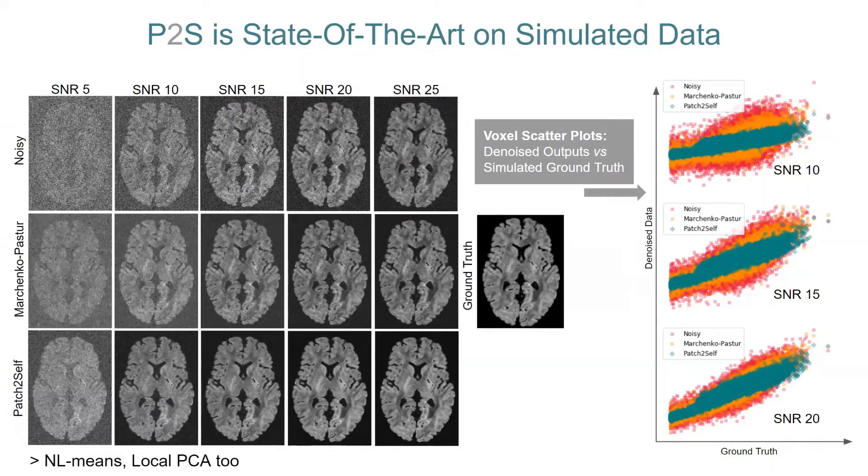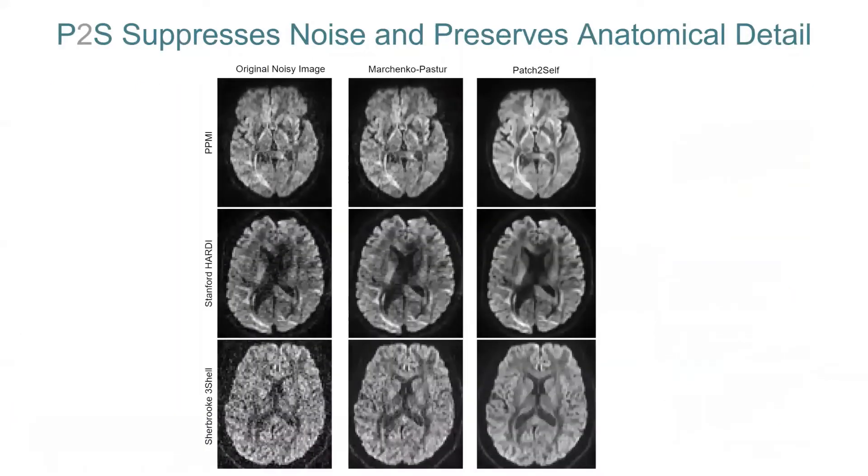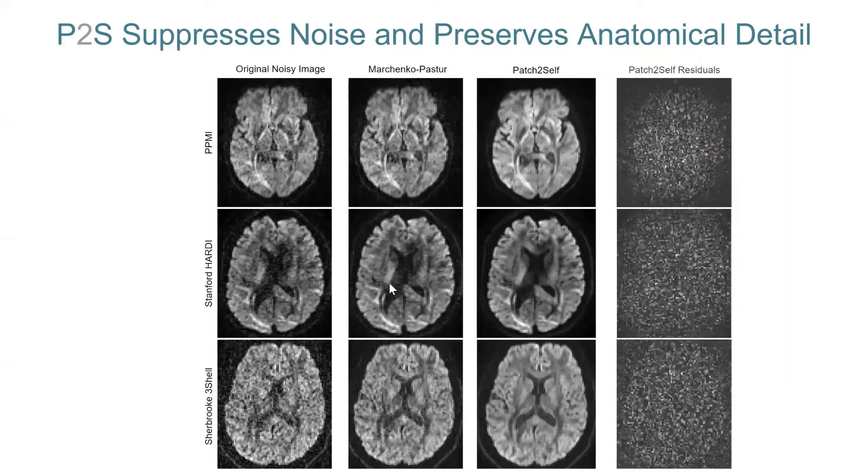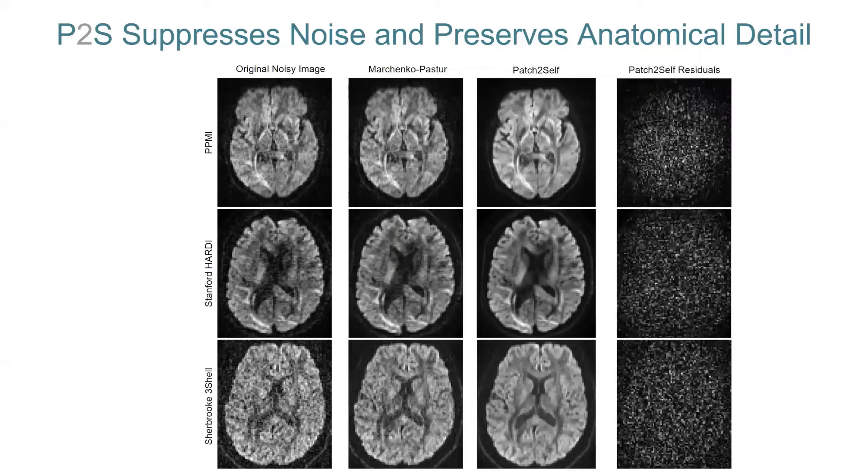Patch2Self does not suppress signal, and it more or less preserves anatomical detail. What that means is that you don't lose edge information, essential tissue information, which you want to preserve for doing downstream analysis, such as microstructure modeling, tractography, and stuff like that. So there's no smoothing of the data. A standard way of evaluating this is by looking at average residuals across gradient directions. And you will see that even MPPCA or Patch2Self, both of them do not really suppress the signal. You are really suppressing noise. The one that you see on top is the standard DTI protocol, 64 directions. The one in the middle is a HARDI protocol, which is 150 gradient directions. And the one at the bottom is the Sherbrooke 3-shell protocol, which is a multi-shell acquisition. And I think it has B values up to 3000.